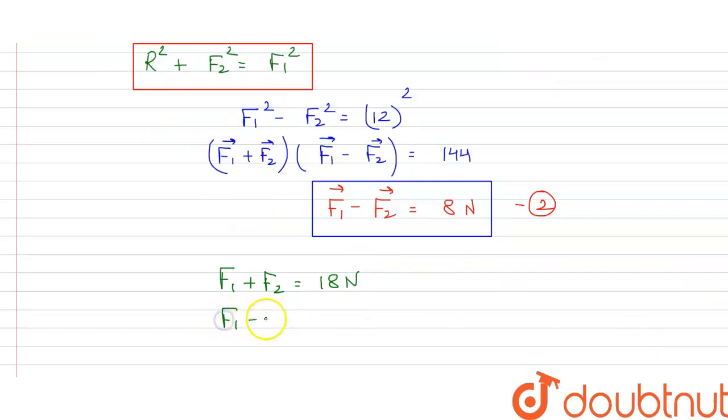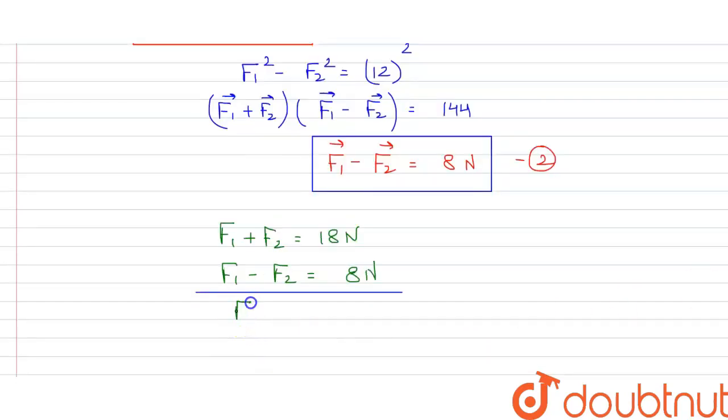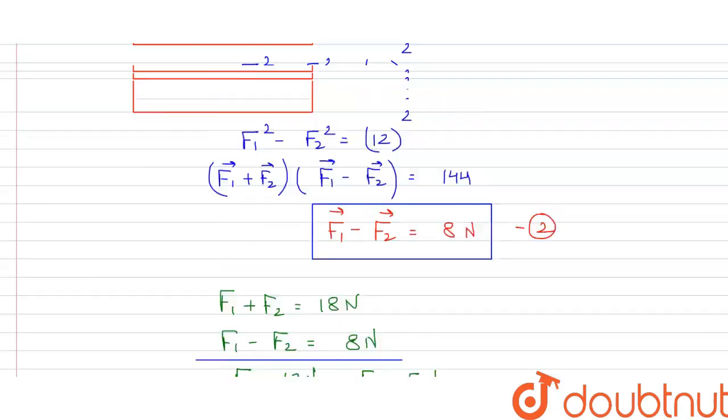...on solving, we get F1 equals 13 Newton and F2 equals 5 Newton. So these are our respective forces F1 and F2. So our correct option is option B: 13 Newton and 5 Newton.